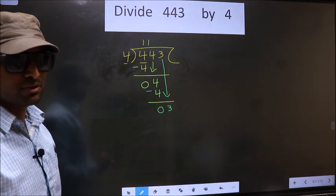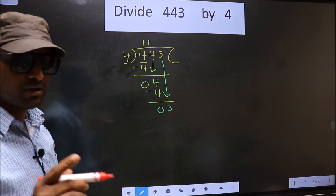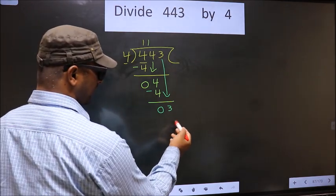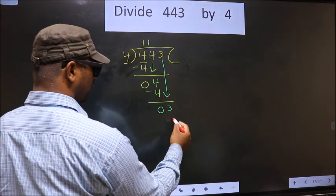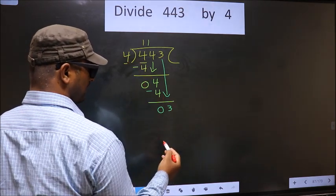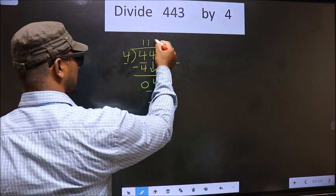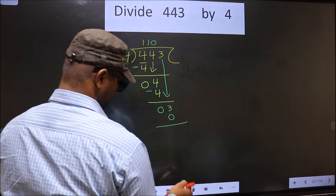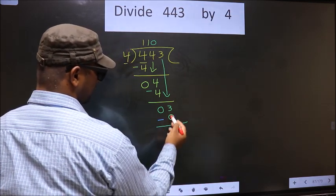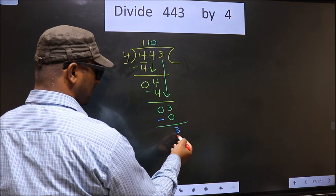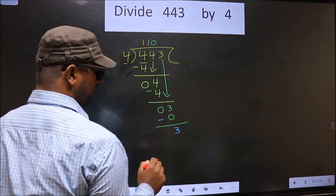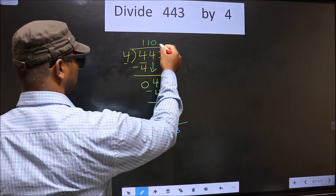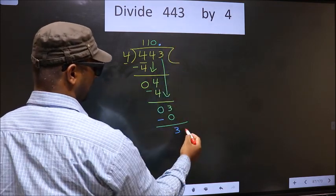Instead, what you should think of is what number should we write here. If we write 4 here, that is larger than 3. So what we do is we take 0 here. So 4 into 0 is 0. Now you subtract: 3 minus 0 is 3. Over here we did not bring any number down, and 3 is smaller than 4. So now you can put a dot and take 0 here.